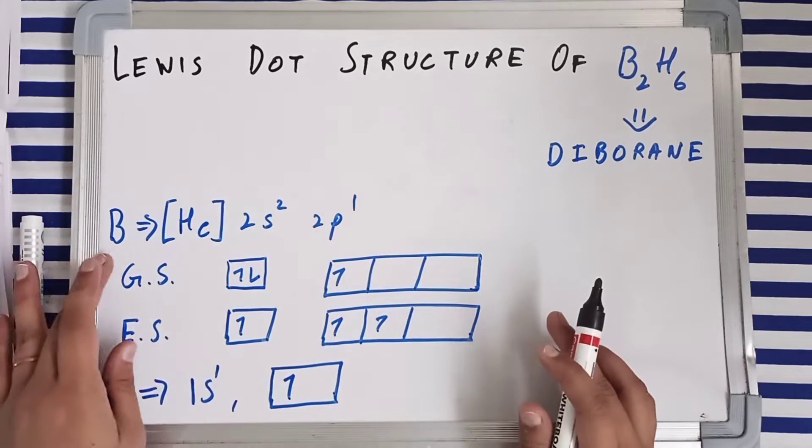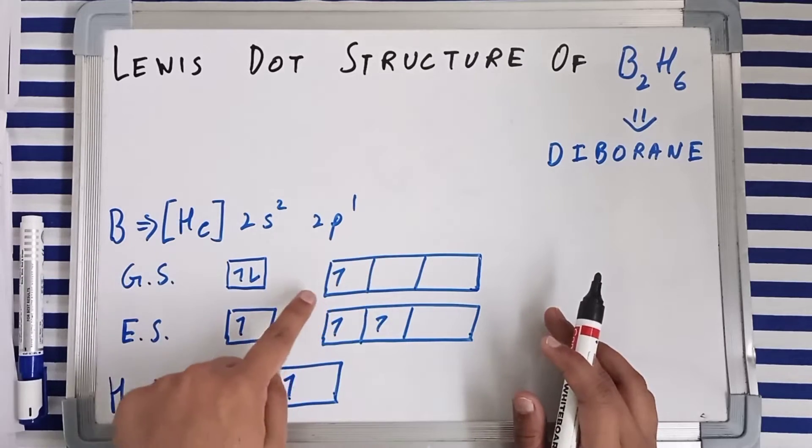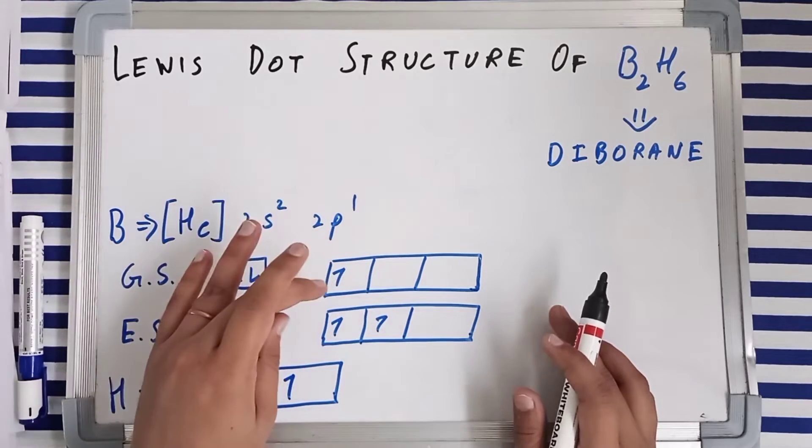In ground state, boron can make only one bond, only one covalent bond because it has got just a single unpaired electron.